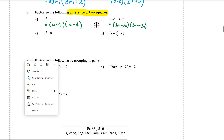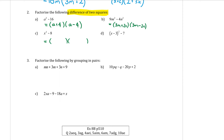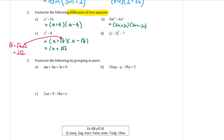Part c: factorize x² − 8 using difference of two squares. Square root x² gives x, but √8 doesn't simplify to a whole number, so we write it in surd form. However, √8 = √(4×2) = 2√2. So the simplified answer is (x + 2√2)(x − 2√2).